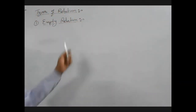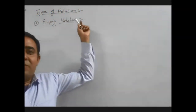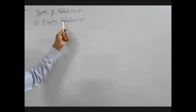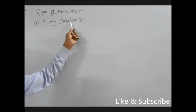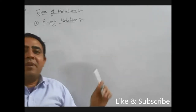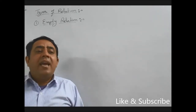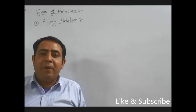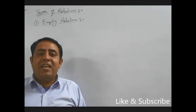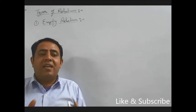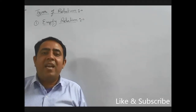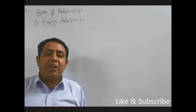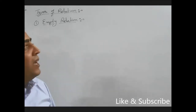Okay students, today we will study about types of relation. The first type of relation is empty relation. A relation R is such that no element of A is related with any element of A — that type of relation is known as empty relation.